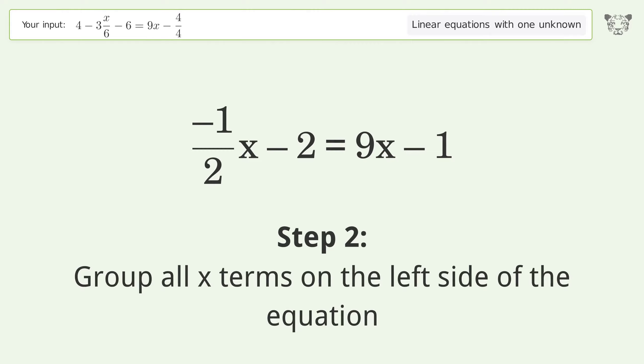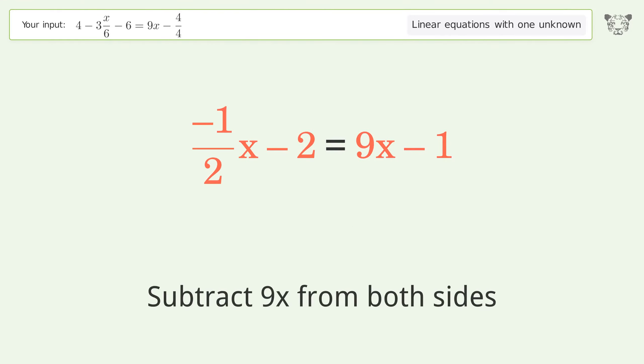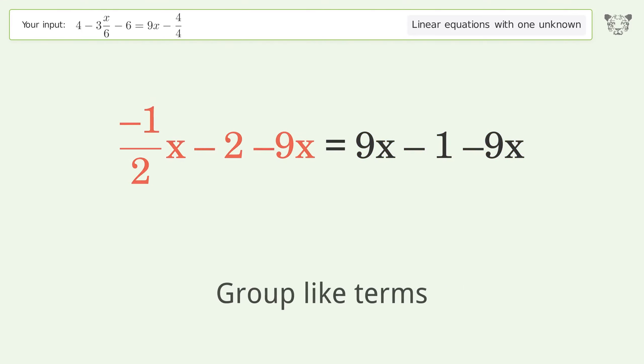Group all x terms on the left side of the equation. Subtract 9x from both sides. Group like terms. Group the coefficients.